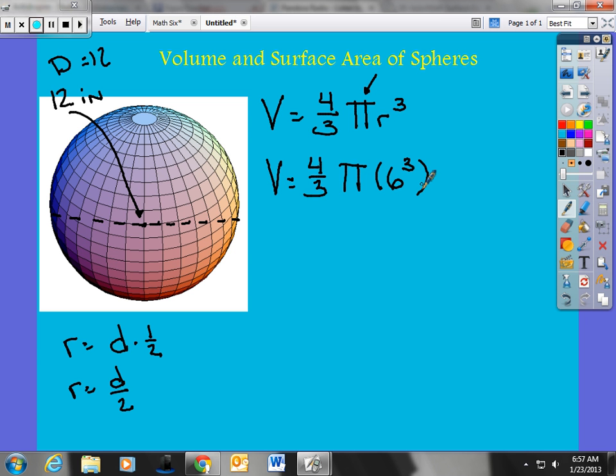Alright, again, 6 to the third power does not mean 6 times 3. It means we're taking 6, our base, and multiplying it by itself the number of times the exponent dictates, which is 6 times 6 times 6. So 6 to the third power using a calculator, that gives me 4 thirds times pi. 6 to the third is 216.